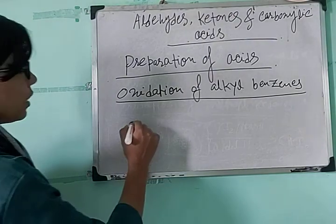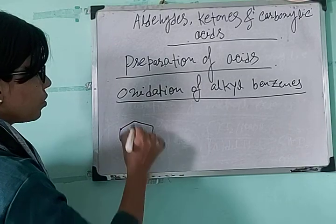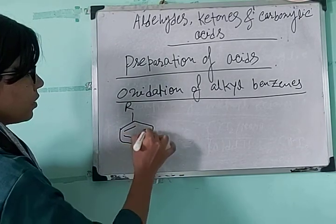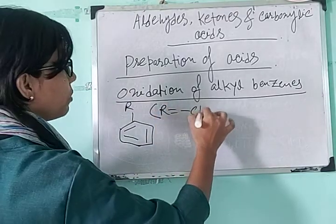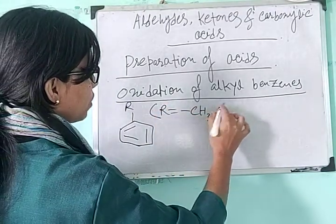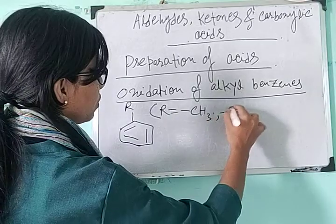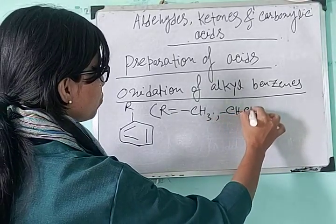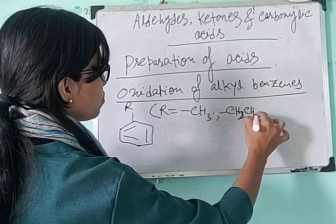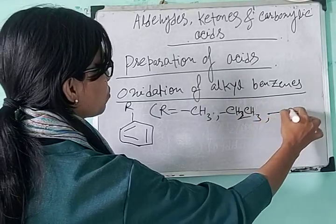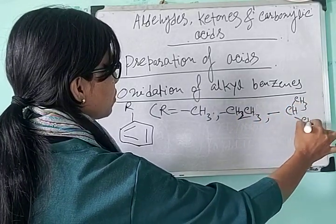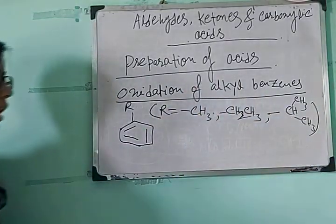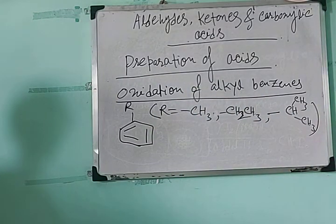Alkyl benzene means any alkyl group can be present. This R group can be a methyl group (CH3), or it can also be an ethyl group (CH2CH3), or any isopropyl group. So they are all alkyl groups and they can be present on the benzene ring.